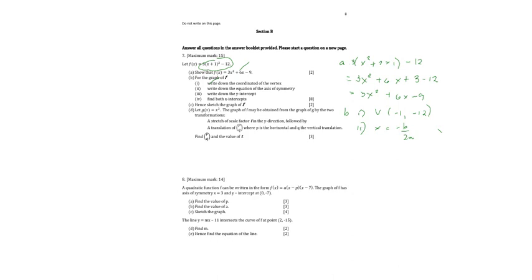With that, we can use the answer in letter a here. So -b is -6 over 2 times 3. So that will give us -1.